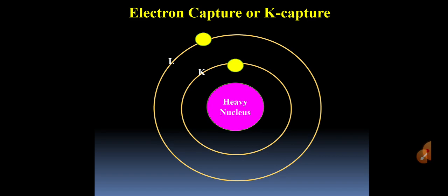In heavy nucleus, if there are larger number of protons, then these heavy nucleus become unstable. To gain stability, the electrons of K-shell are captured by the nucleus.